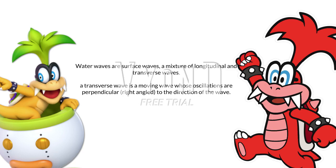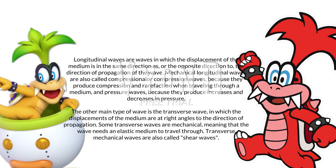Water waves are surface waves, a mixture of longitudinal and transverse waves. A transverse wave is a moving wave whose oscillations are perpendicular — right-angled — to the direction of the wave. Longitudinal waves are waves in which the displacement of the medium is in the same direction as, or the opposite direction to, the direction of propagation of the wave. Mechanical longitudinal waves are also called compression waves, because they produce compression and rarefaction when traveling through a medium, and pressure waves, because they produce increases and decreases in pressure. Some transverse waves are mechanical, meaning that the wave needs an elastic medium to travel through. Transverse mechanical waves are also called shear waves.